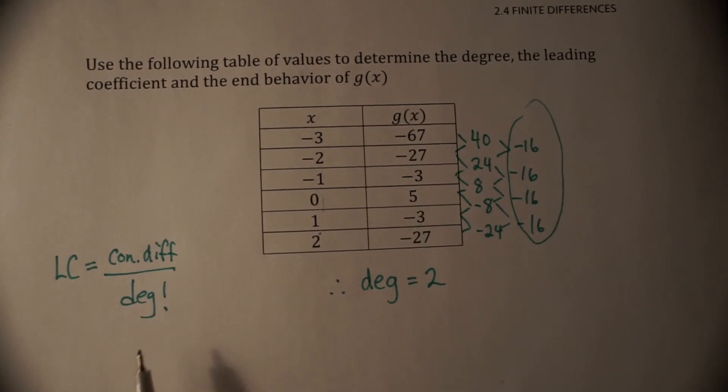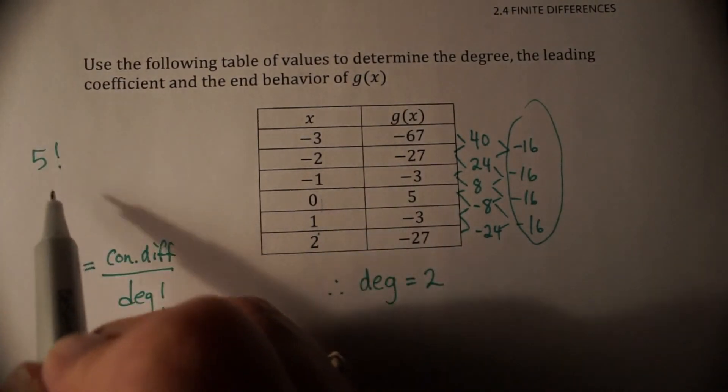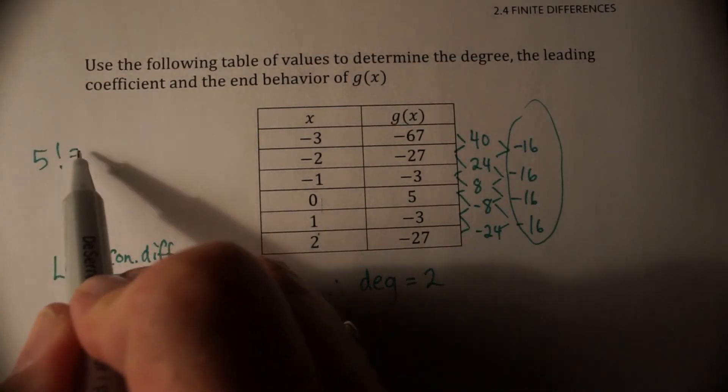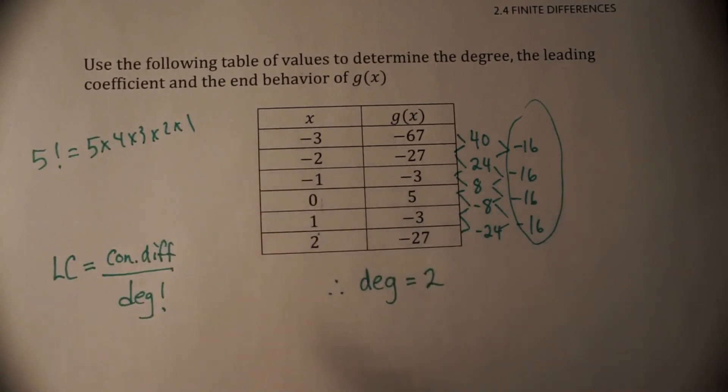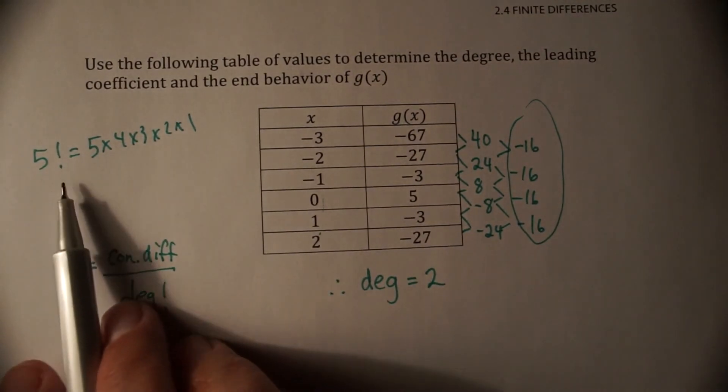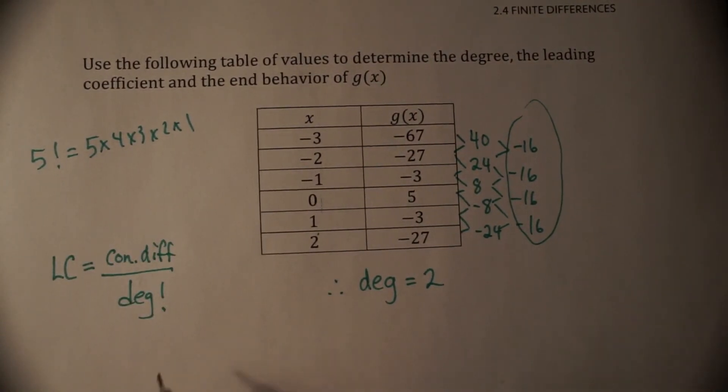Divided by the degree factorial. Now that's a new symbol for us. And factorial just means, like if you have 5 factorial, that little exclamation mark means factorial, it means you have 5 times 4 times 3 times 2 times 1. It means you take your number and you just multiply it all the way down to 1. So in this case, we have our degree factorial is 2. So we have 2 factorial.